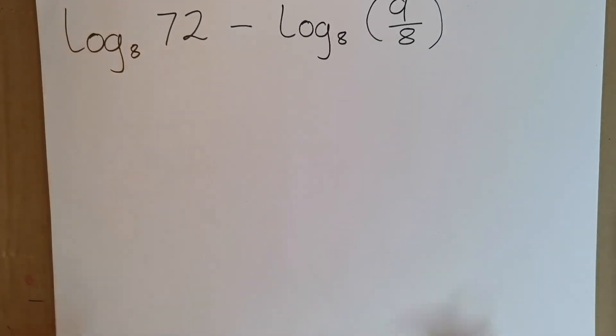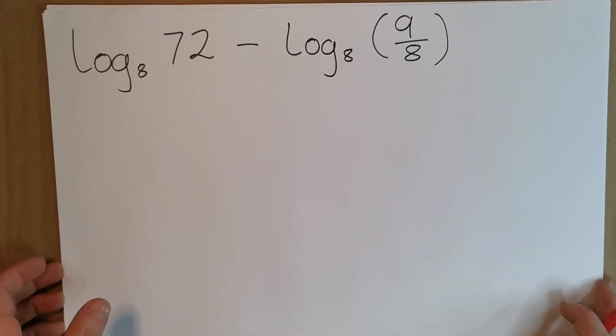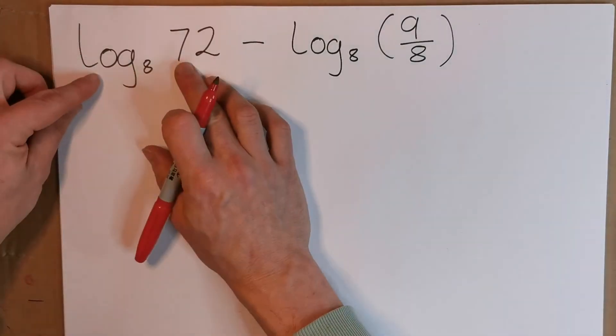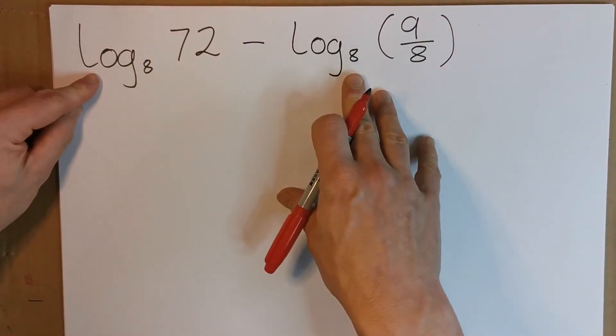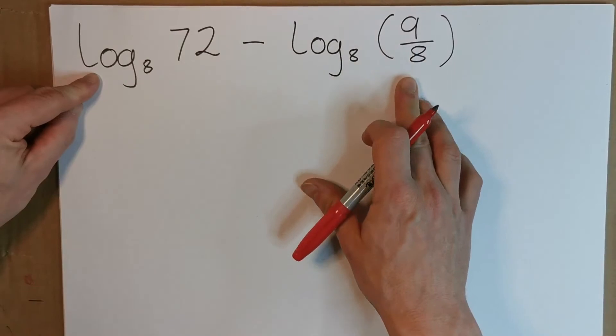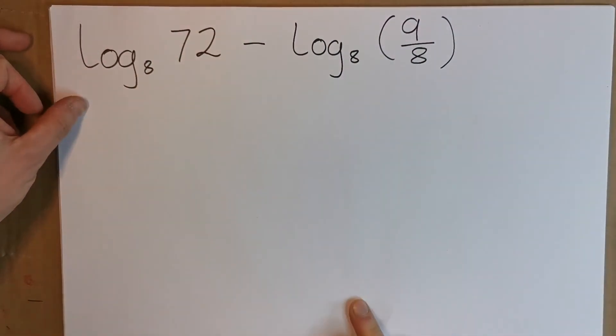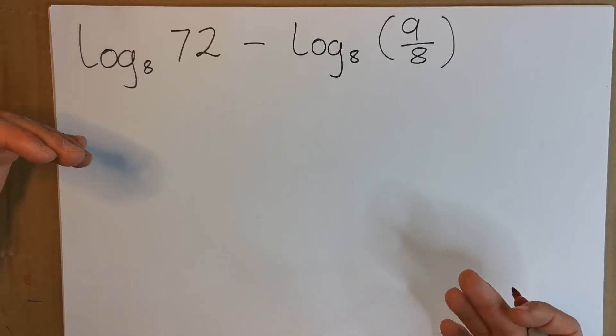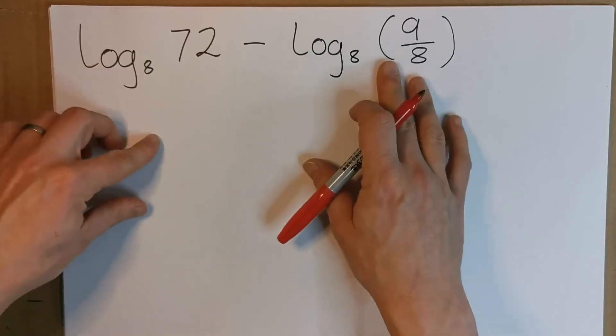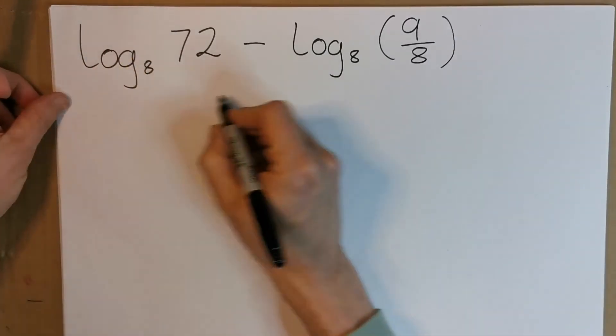Let's look at this one here, the last one for this video. We have log base 8 of 72 minus log base 8 of 9 over 8. First off, I can see that 8 to the power of something gives me 72. The first power I think of is 8 squared, that's 64, then cubed, so I'm not going to get anything out of that. So let's look at this one here.